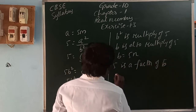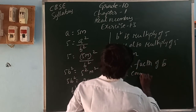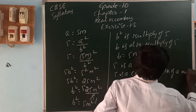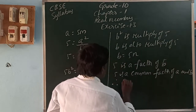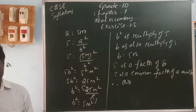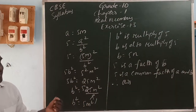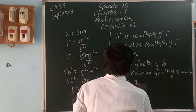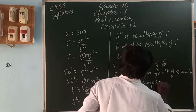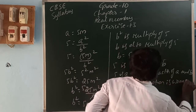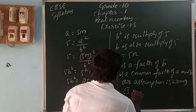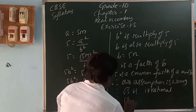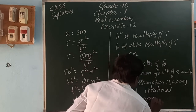So 5 is a common factor of both a and b. Therefore our assumption is wrong, because we assumed root 5 is a rational number with common factor 1, but here the common factor is 5. Therefore root 5 is an irrational number. Hence proved.